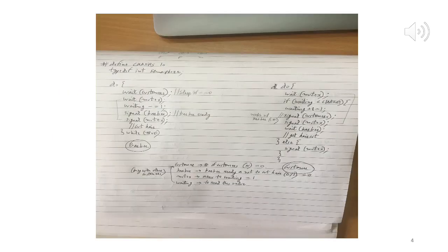Now on slide 4, we discuss the solution to the sleeping barber's problem. The 'customers' semaphore is a counting semaphore initialized to zero. The barber process starts by doing wait(customers); since customers is zero the barber process waits — it sleeps. When the first customer comes they do signal(customers) so the barber can wake up and start cutting hair. The 'barber' semaphore is binary, also initialized to zero, indicating whether the barber is ready to cut hair.